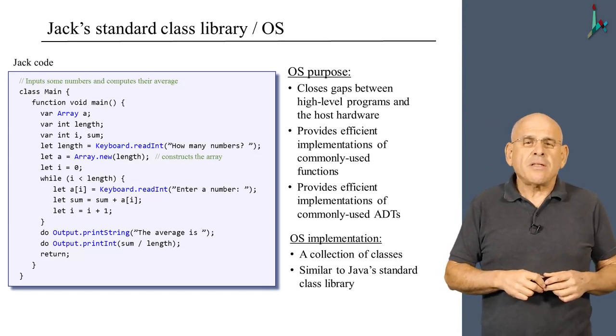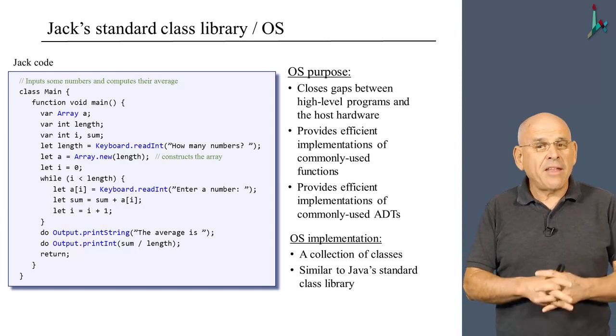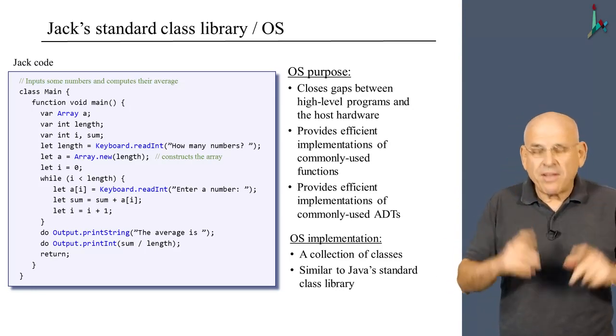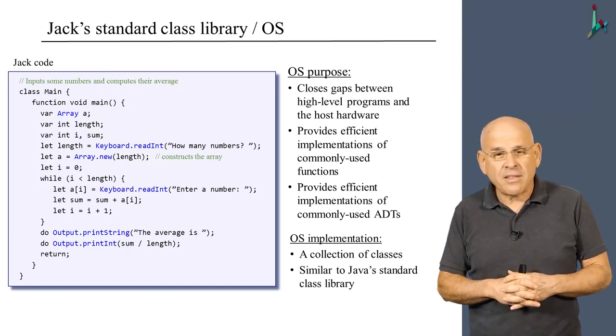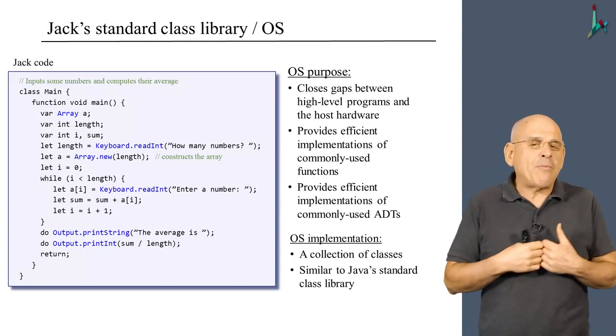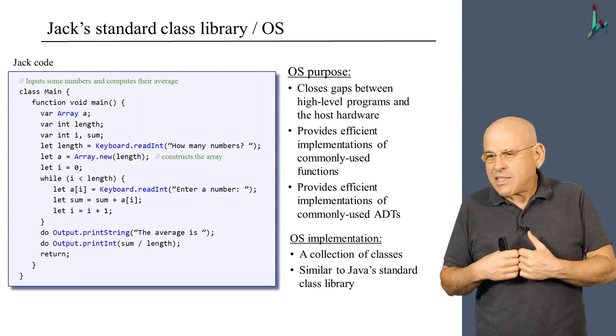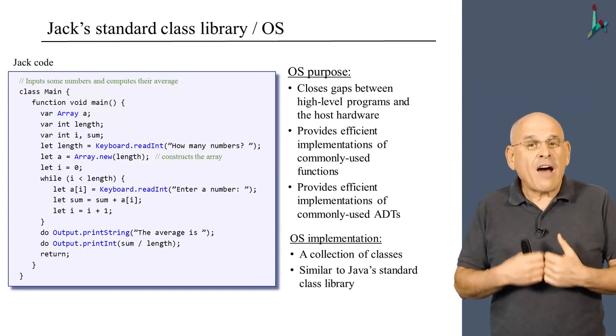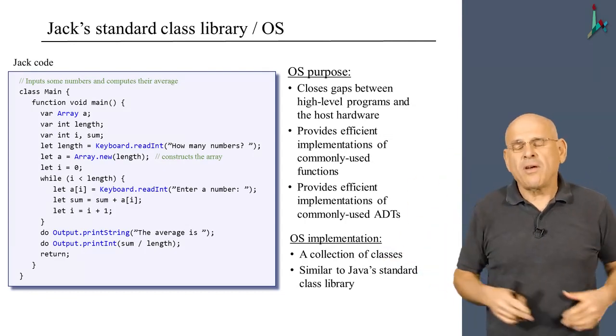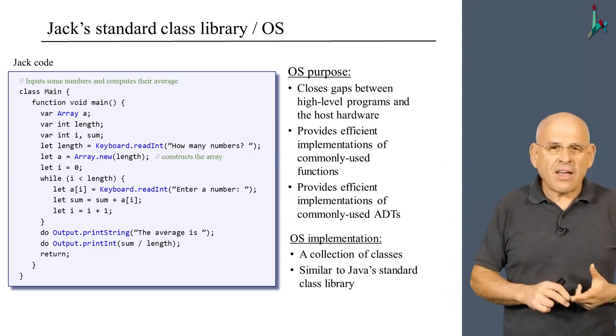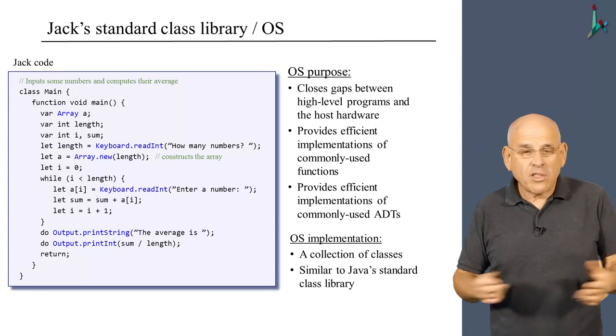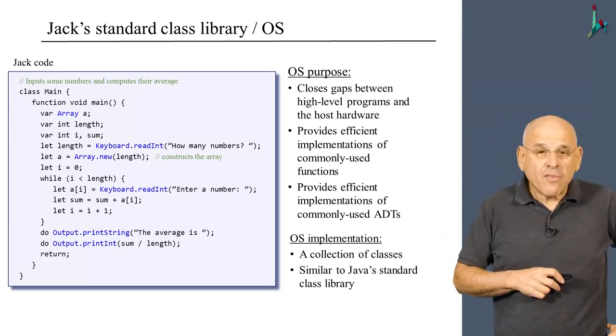In terms of implementation, the OS that accompanies Jack consists of eight classes. We'll see them in the next slide. And once again, the whole concept is similar in spirit, I emphasize in spirit, to the Java's standard class library. And the only difference between our class library and Java's class library is that our library contains eight classes. And the Java's standard class library as of Java 8 contains, I think, more than 4,000 classes. And that's because Java is an industrial strength language. So you have to support so many things like networking, and files, and encryption, and multi-threading, and numerous other things. And of course, we could have done the same with Jack. But we didn't have to, because it's not in the scope of the course.